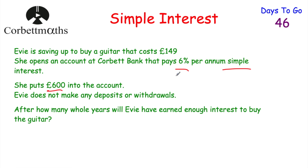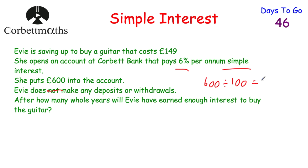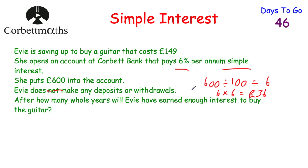Let's work out 6% of £600. We take £600 and divide by 100 to find 1%, which gives us £6. Now we want 6%, so we multiply £6 by 6, which equals £36. So she will earn £36 interest every single year, because with simple interest it's the same amount every year. Now she wants to buy the guitar using the interest, and it costs £149, so we can count up in 36s.